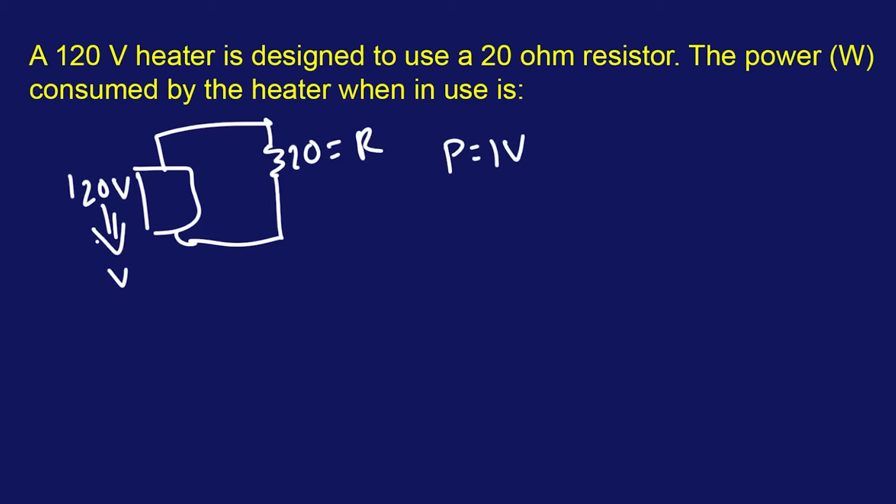I know the power equation is current times voltage in DC circuits, and the problem here is that we don't have the current. Well, how are you supposed to find the current? Well, going back to what's his name? I forgot his name. Is it Ohm's Law? Yeah, it's Ohm's Law, correct? We know Ohm's Law equals V equals IR.